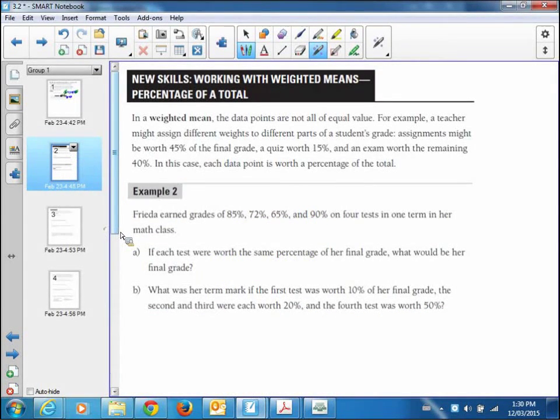The next page is weighted means and percentages of a total. In a weighted mean, the data points are not all of equal value. For example, a teacher might assign different weights to different parts of a student's grade. Assignments might be worth 45% of a grade. Quizzes worth 15%, and an exam worth the remaining 40%. In this case, each data point's worth a different percentage of a total.